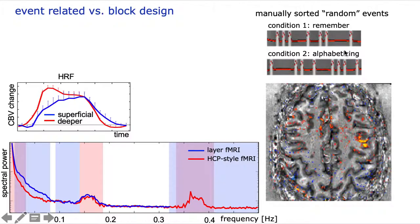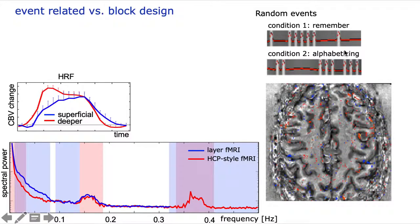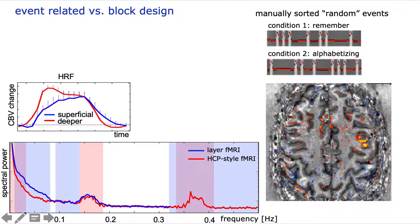Whereas, for example, when we manually reassign these different task conditions to better fall into the frequency domain, we can better separate the signal from the noise.